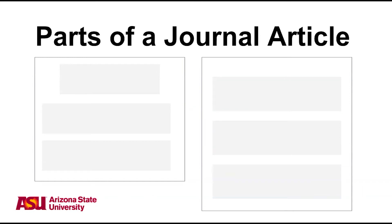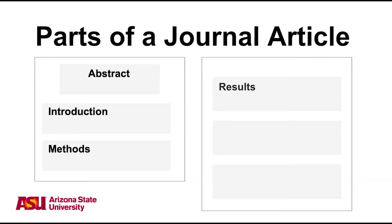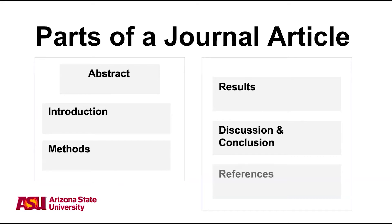Journal articles follow a specific format so that information is easier to find. A journal article will have seven distinct sections: the abstract, introduction, methods, results, discussion and conclusion, and references. Many times, the discussion and conclusion sections are combined.